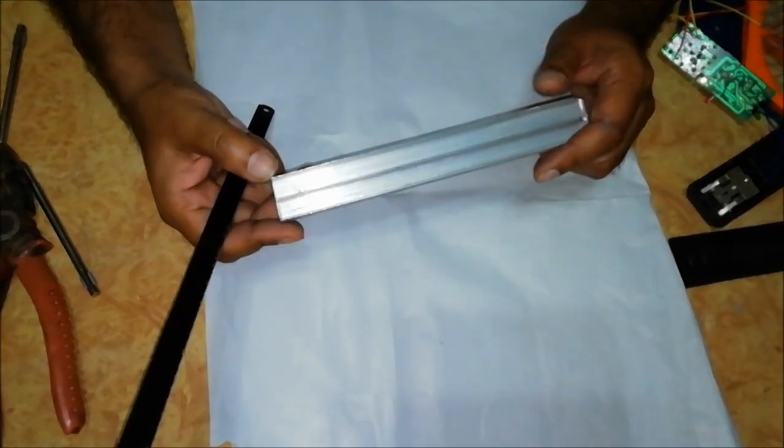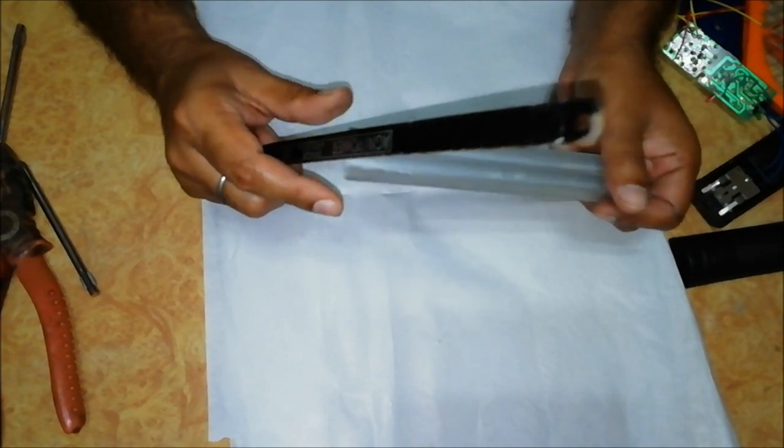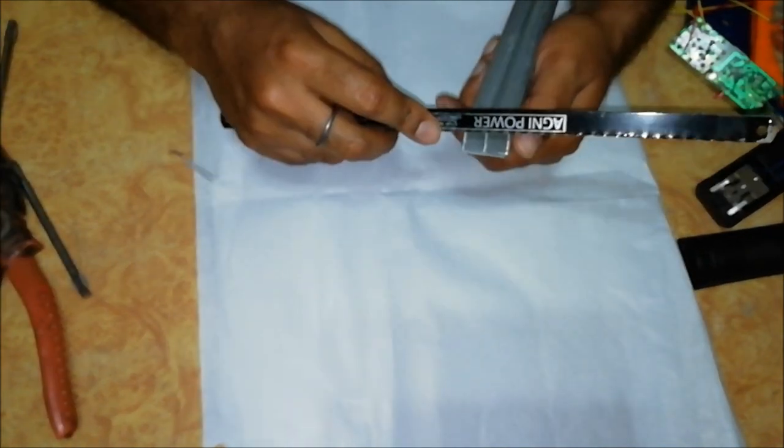For converting we require a half feet long aluminum channel. Cut diagonally at one end of this aluminum channel with the help of a hexagon blade like this.